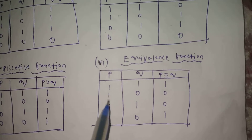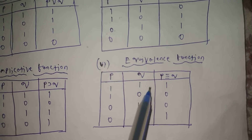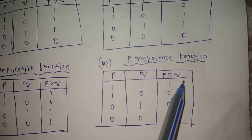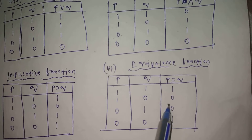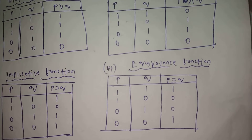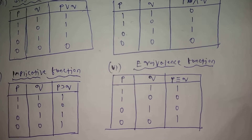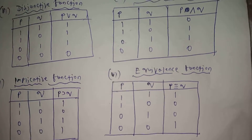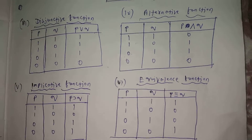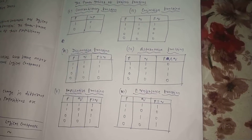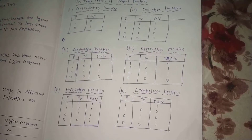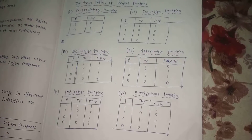The equivalence function: P takes values 1, 1, 0, 0 and Q takes values 1, 0, 1, 0. The equivalence function gives value 1 when both are the same. P conjunction Q and P disjunction Q are related equivalence functions.